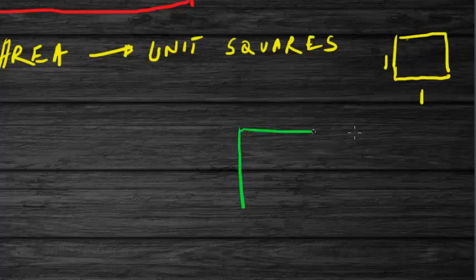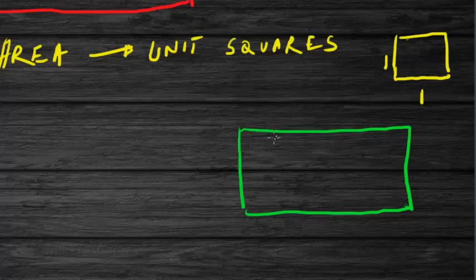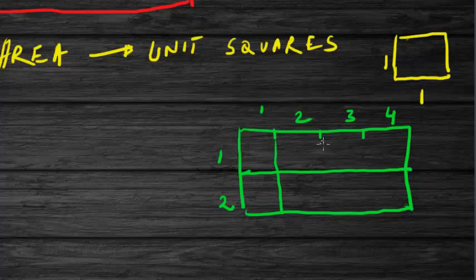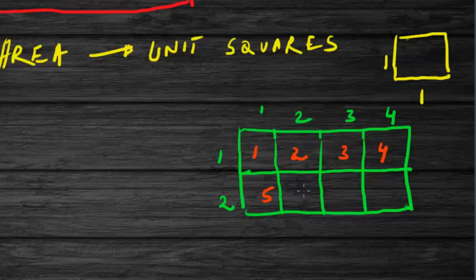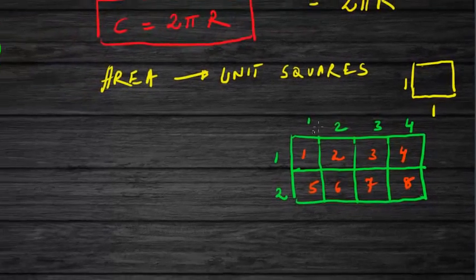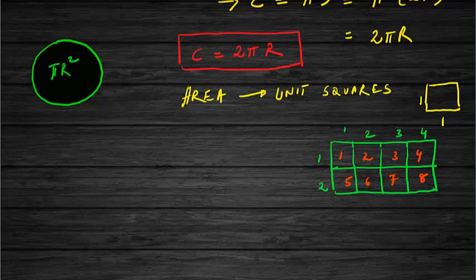Consider a rectangle with length equal to 4 and breadth equal to 2. The area is easy to measure because it is just the number of unit squares contained in the rectangle — that is 1, 2, 3, 4, 5, 6, 7, 8: there are 8 unit squares. We just multiply the length by the breadth. So the area of a rectangle equals its length times its breadth.